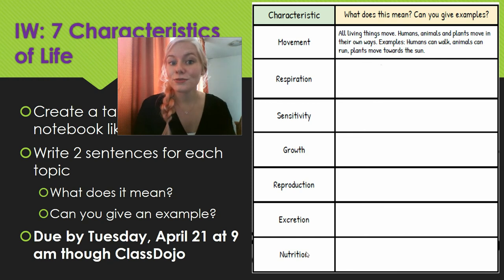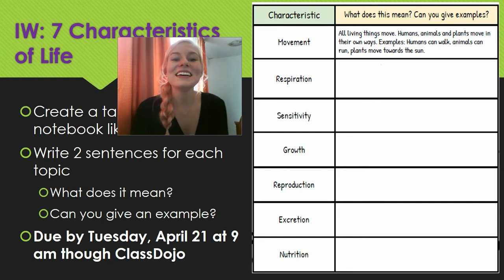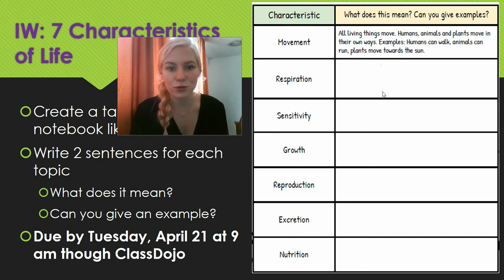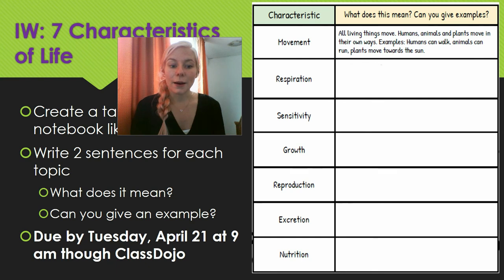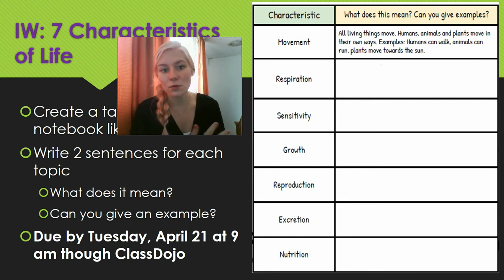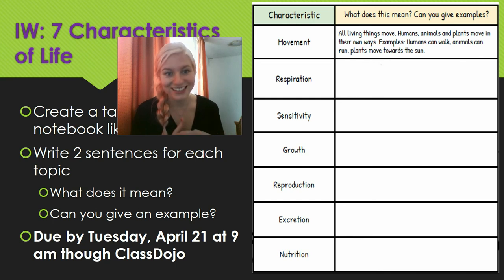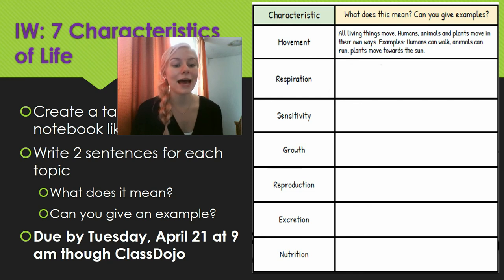That means you're going to write 14 sentences, which seems like a lot, but it won't be too hard — just two sentences for each one. Pretty simple: what is it, and what's an example. This is due by Tuesday, so you have quite a bit of time — all of Friday, all weekend if you want to work on it, and then all of Monday as well. It's due by Tuesday, April 21st at 9 a.m.